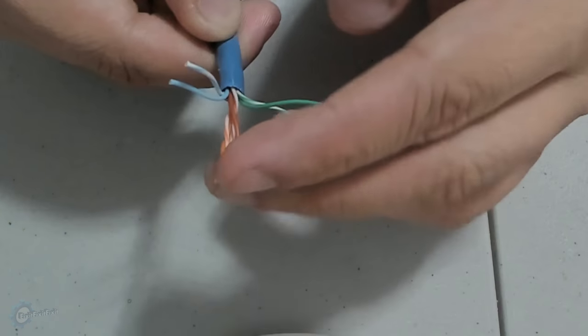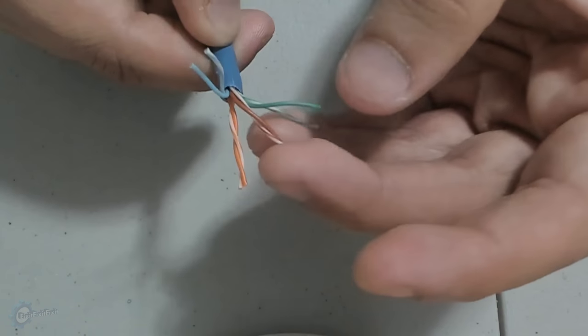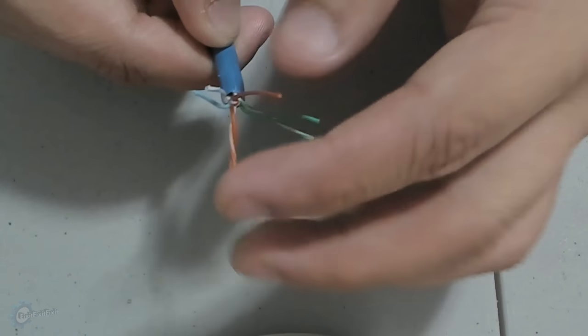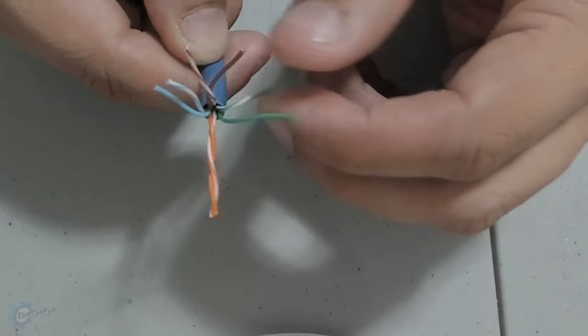The first thing you want to do is separate these wires by colors: orange, green, blue, and brown. You will see that each color has a solid colored wire and a striped colored wire.